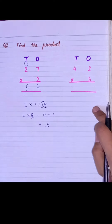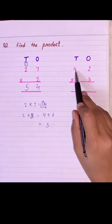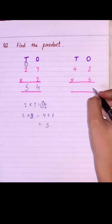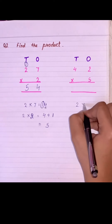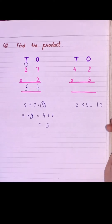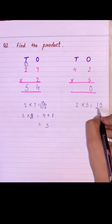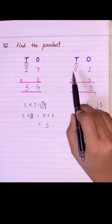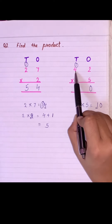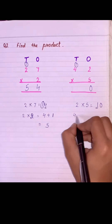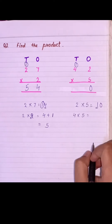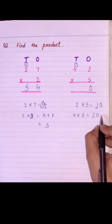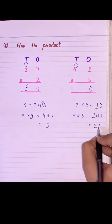Similarly, let's do the next question: 42 multiplied by 5. The first step — multiply the ones: 2 into 5 is 10, so we write 0 here and the 1 goes under the tens place as carry over. Second step — multiply the tens digit: 4 into 5 is 20, and we add the carry over, so 20 plus 1 will be 21.